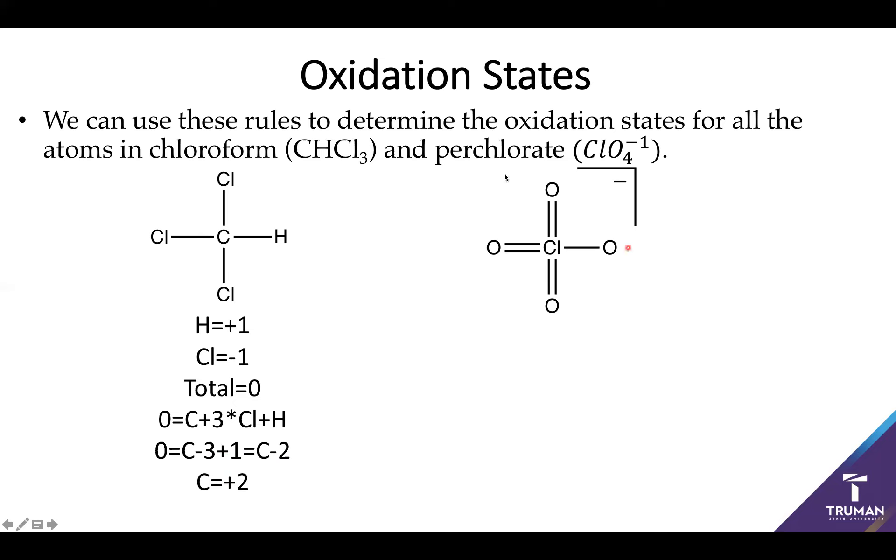Now let's look at this famous pesky case of perchlorate. So in this case, we're going to start with oxygen. It's a terminal atom. Chlorine in this case is a mono. It has an oxidation state of minus two. We know that the total has to be minus one.